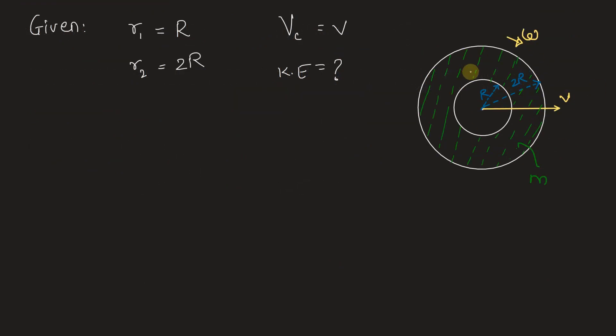Let this be the annular disc. As per the given information, we have denoted all the geometric properties here along with the velocity of center v, mass of the annular disc m, and we have also shown the angular velocity of the disc omega.